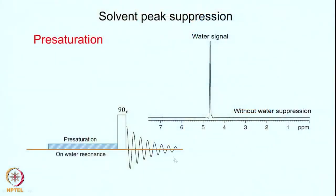Therefore, what one needs to do is to suppress the solvent peak, and that is what we are going to discuss today. Here is the spectrum of a sample which is in water — you have a huge water signal. This is a spectrum without water suppression, and you will see only the signal of the water; you do not see anything of your sample at all.